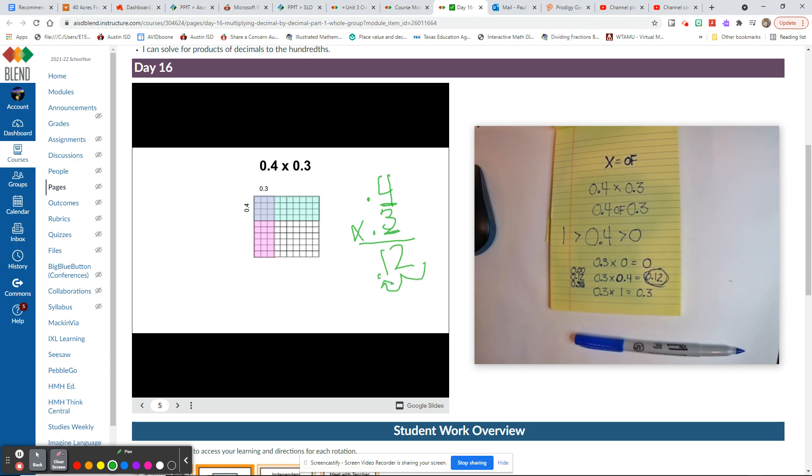Put that many decimal places in our product, so there's two, and there you have it: 0.12, which is the exact same thing you're looking at right here. There's three tenths in four groups, or four tenths in three groups. Either way, there's twelve hundredths.